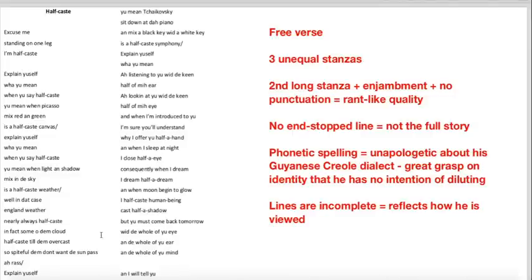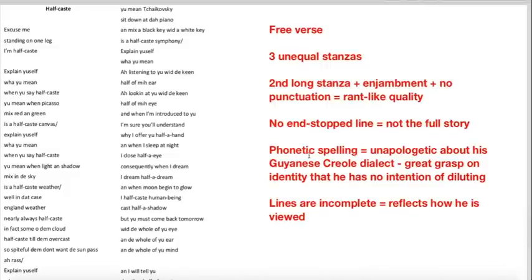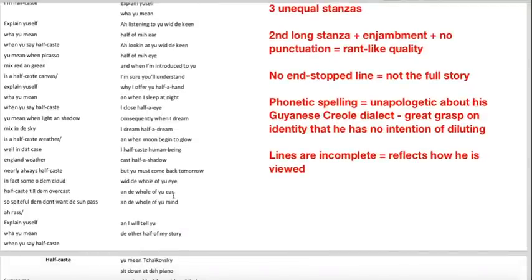We have three unequal stanzas. I'm going to focus mostly on the second long stanza. So it starts here, explain yourself and goes all the way down to and the whole of your mind. I think through the use of enjambment and through the use of no punctuation in this stanza, it delivers much more like a rant. You can imagine him getting really angry and just spilling out with all these frustrations. There's no end stop line even at the end. So I think that reiterates that it isn't the full story. If you think in the way a bigot does, you're not opening your mind to hear the full story. You're not opening your mind to see John Agard as a whole person and really appreciate him for everything that he is.